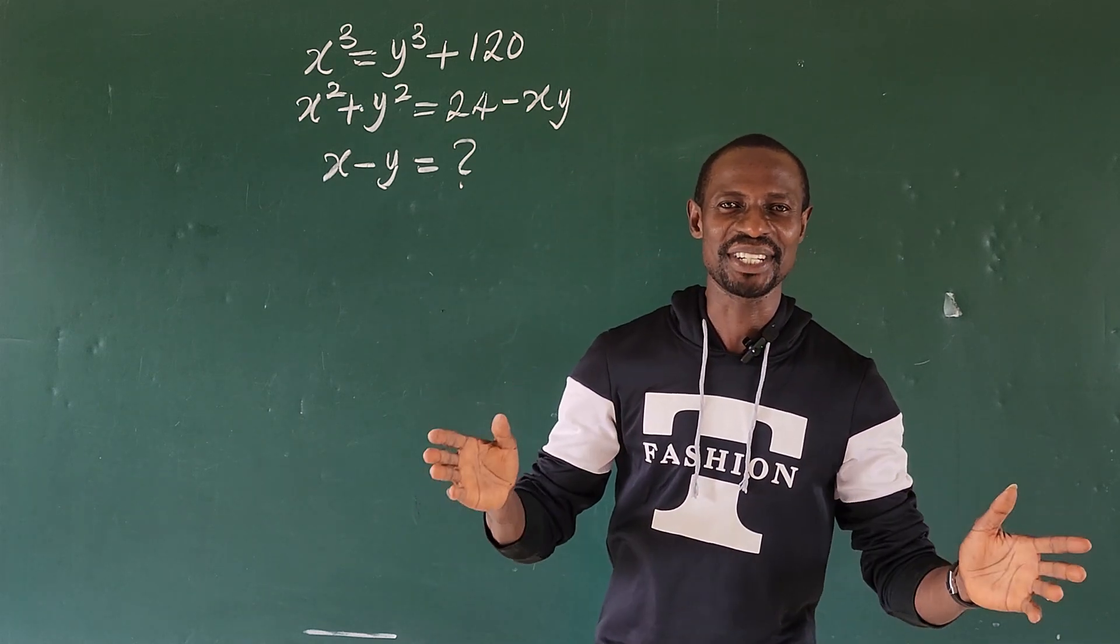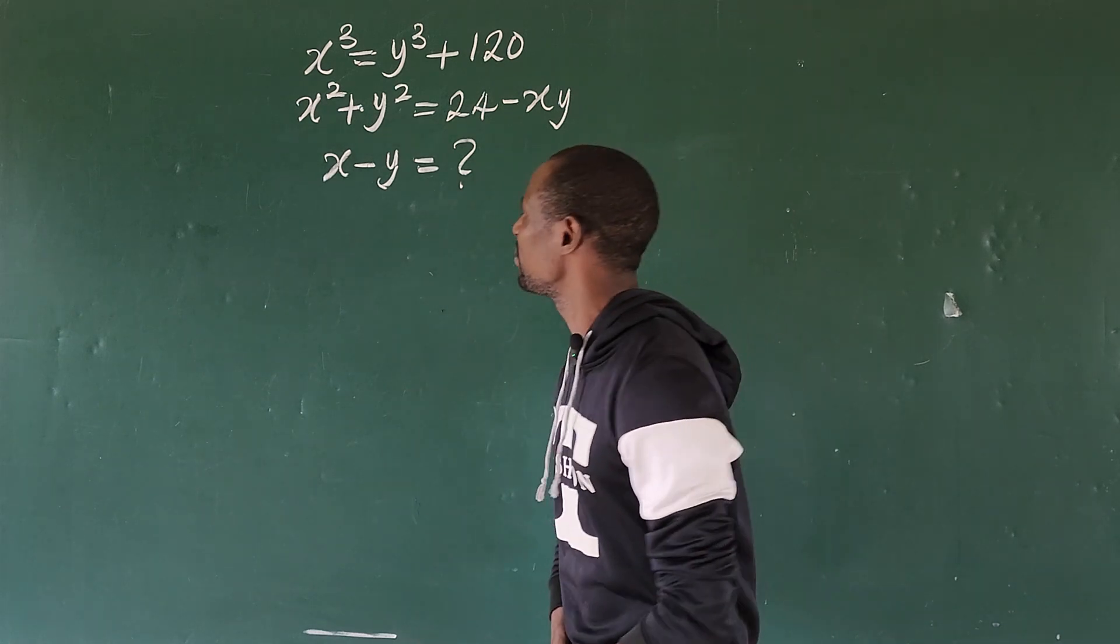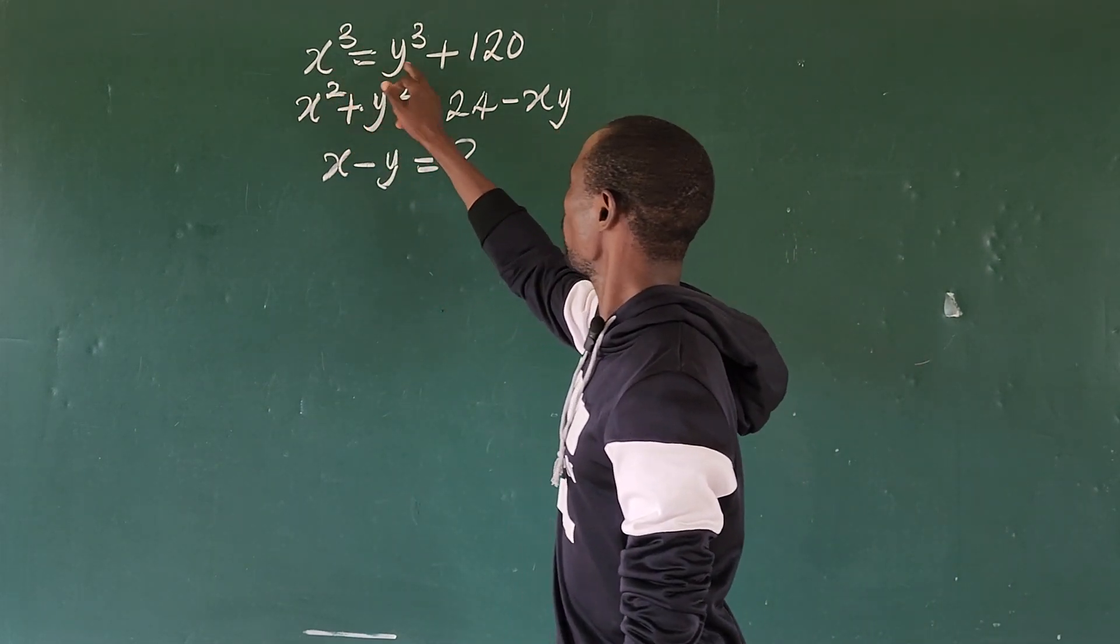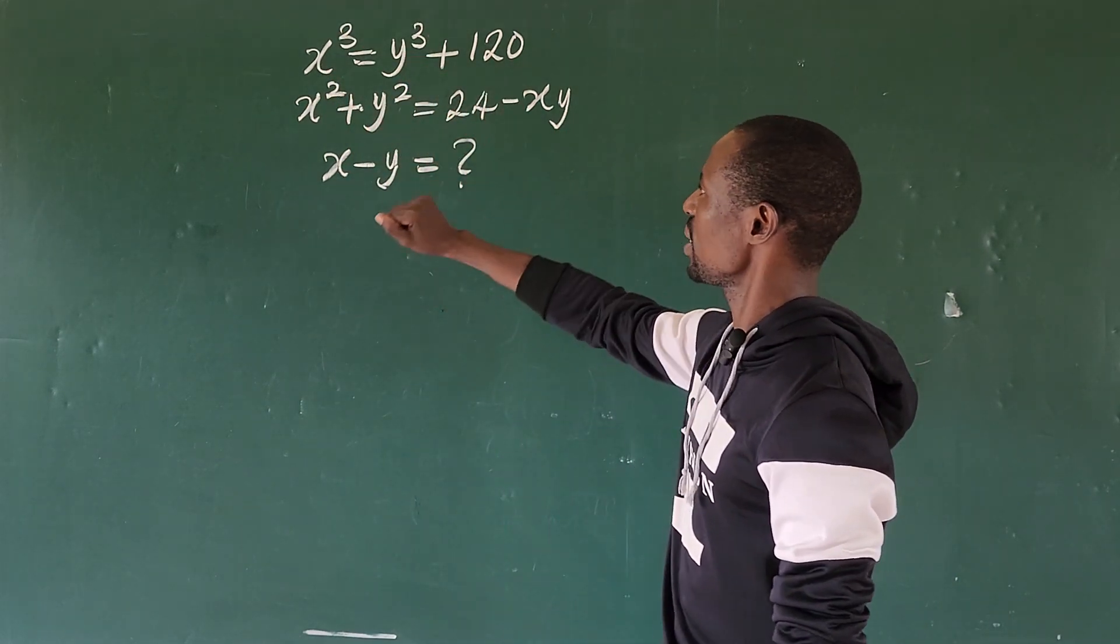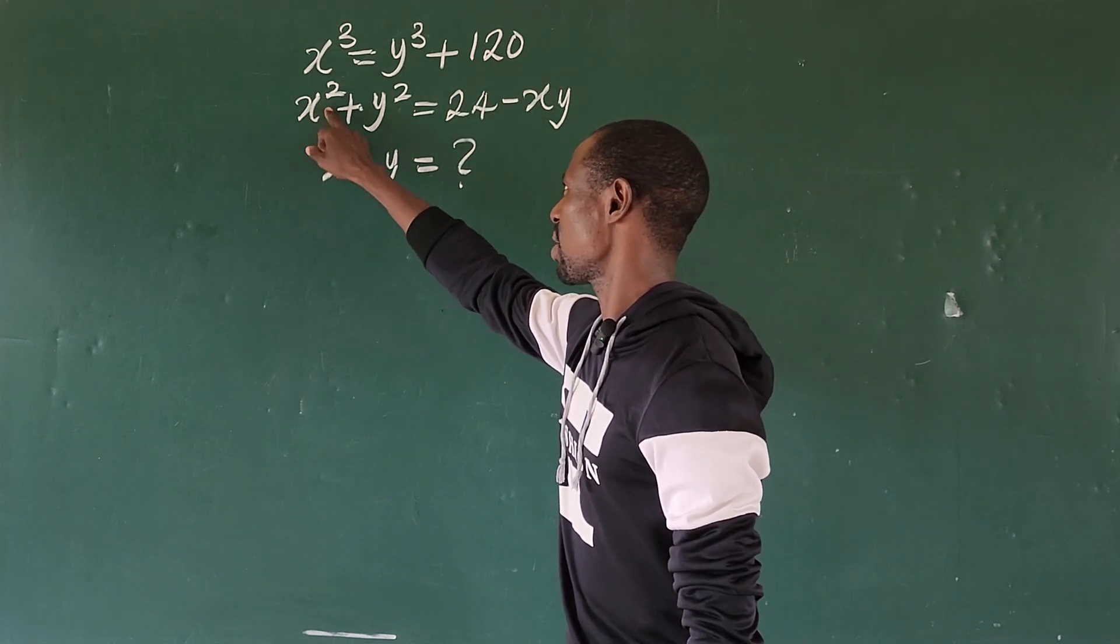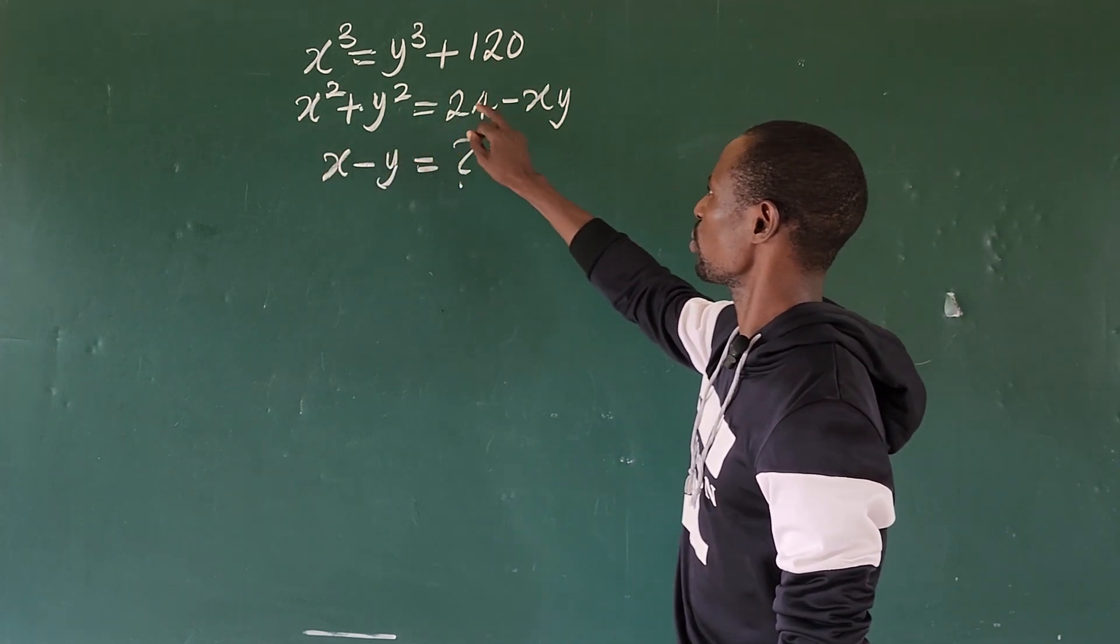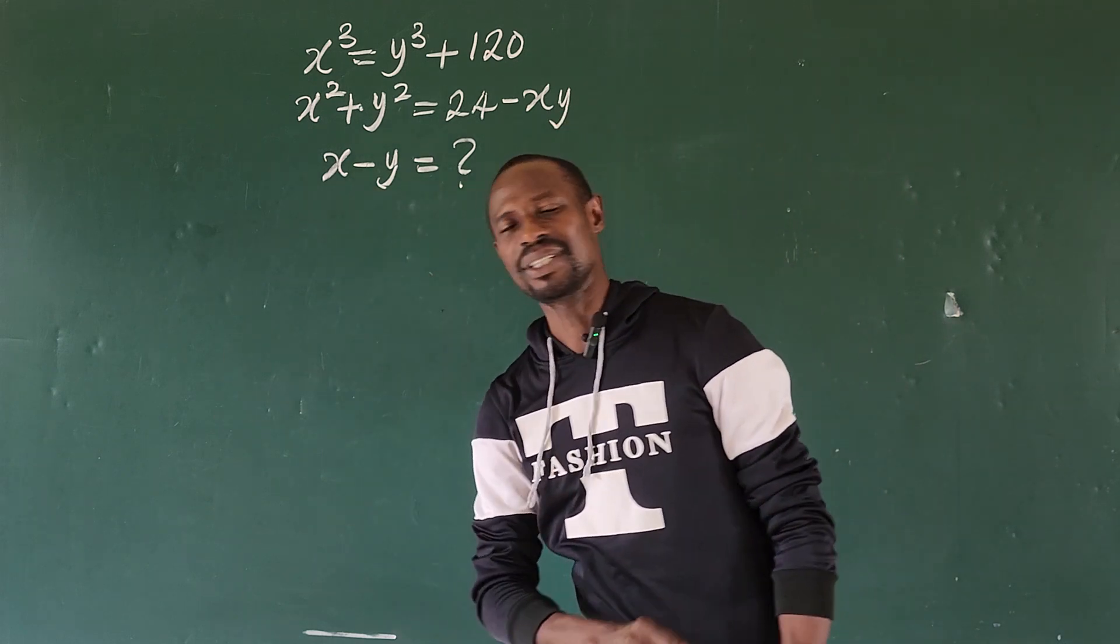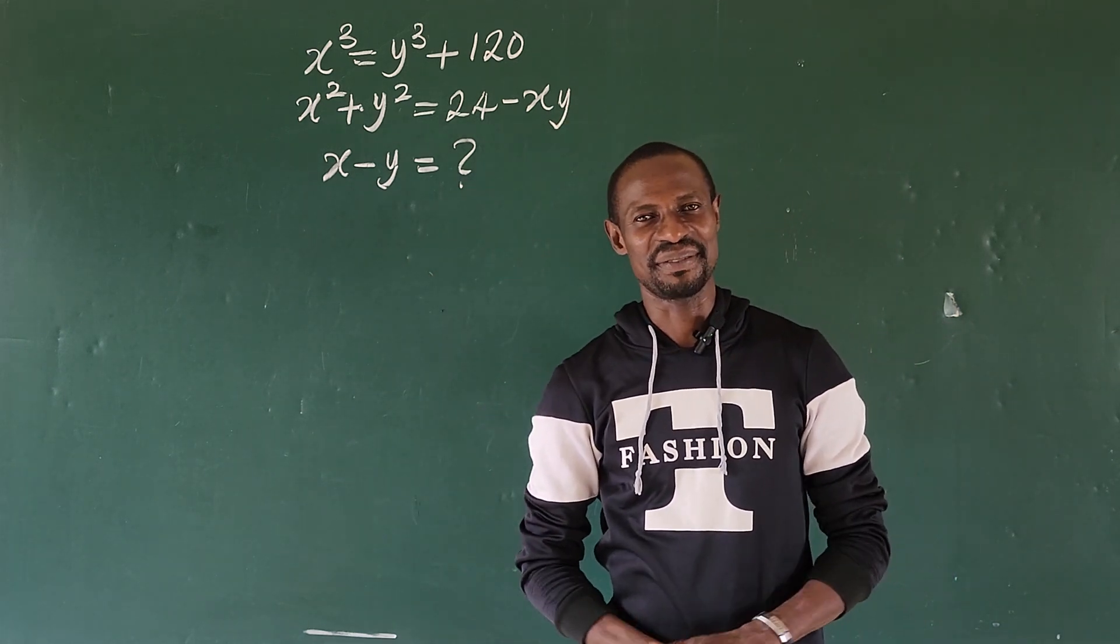Hello my good people. Before us here we have a very sweet math problem. The question is: x³ = y³ + 120, that is the first equation. We have x² + y² = 24 - xy. We are asked to find the value of x - y.